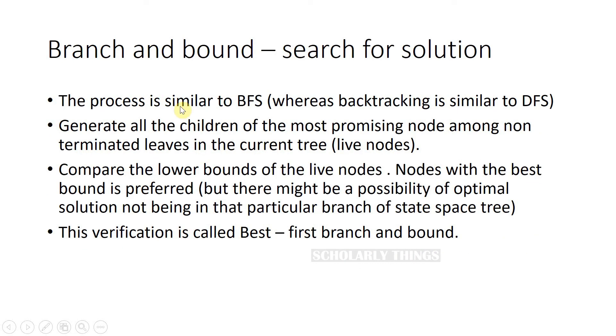The process of branch and bound is similar to BFS, whereas in backtracking we saw that it was similar to DFS. An important point with respect to the order followed in branch and bound is that rather than generating a single child of the last promising node as we did in backtracking, here in branch and bound we will generate all the children of the most promising node among non-terminated leaves in the current tree.